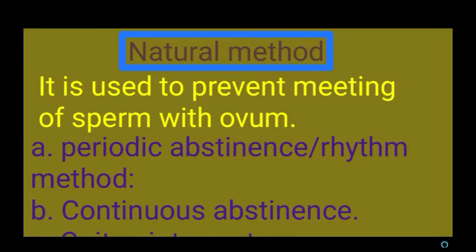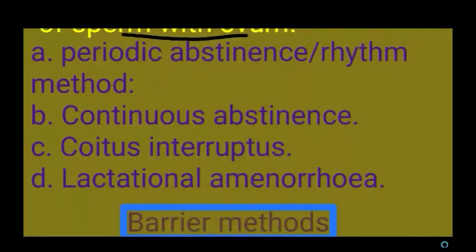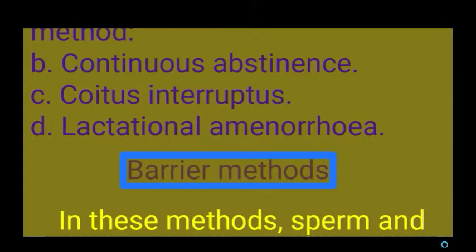The natural method aims to prevent the meeting of sperm with ovum. The ways to achieve this include: periodic abstinence or rhythmic method, continuous abstinence, coitus interruptus, and lactational amenorrhea.